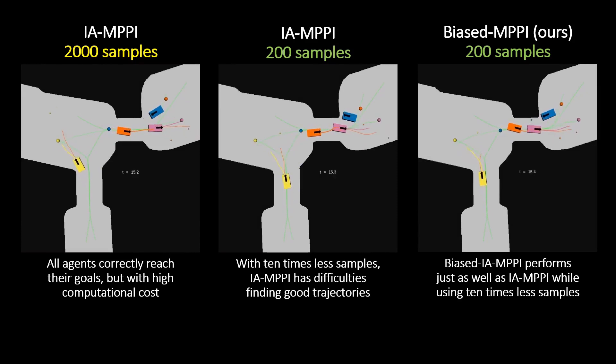On the right, our proposed biased MPPI scheme also samples braking, move slow, move fast, and move to goal maneuvers. Additionally, we also sample from a learning-based trajectory prediction model to further inform the sampling scheme.